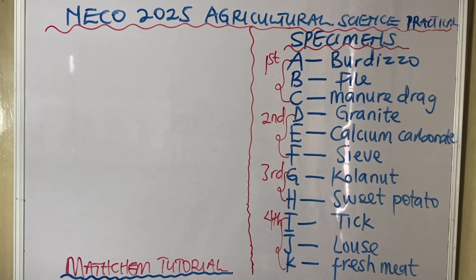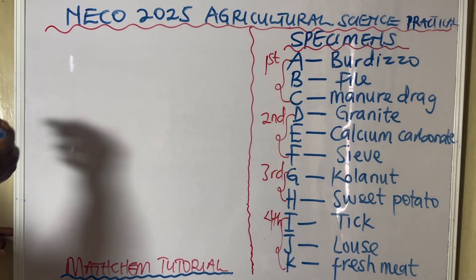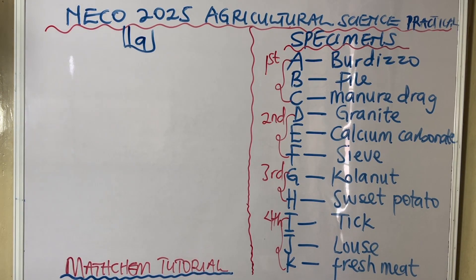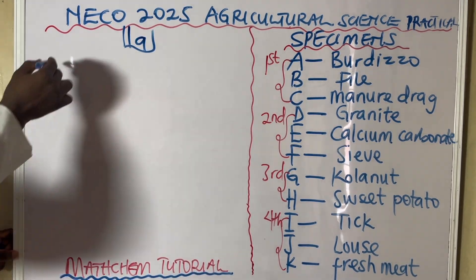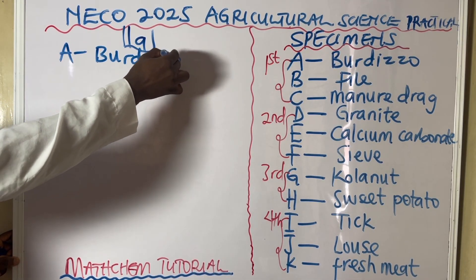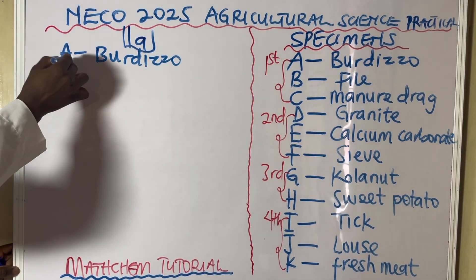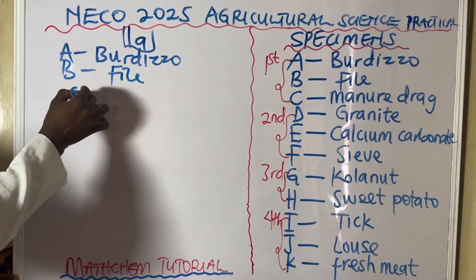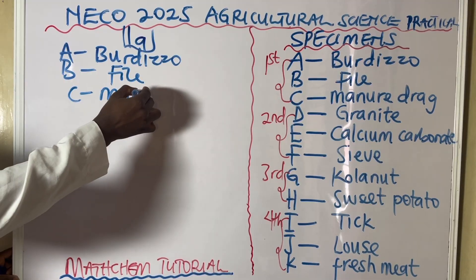Now let's go into possible questions they can ask based on this first category. The first question they might ask is to identify specimens A, B, and C. Specimen A is a Burdizzo, specimen B is a file, and specimen C is a manure drag.